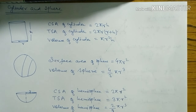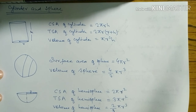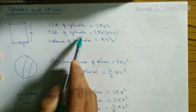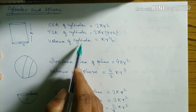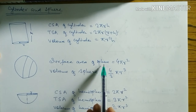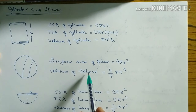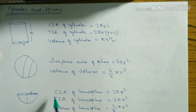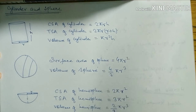After this, prism and pyramid remain. To recap: CSA of cylinder, TSA of cylinder, and volume of cylinder are the three formulas. For sphere: surface area and volume. For hemisphere: CSA, TSA, and volume.